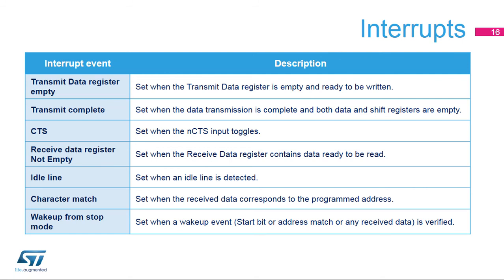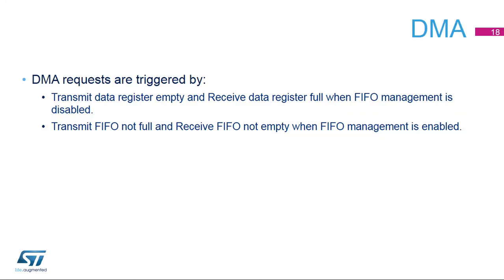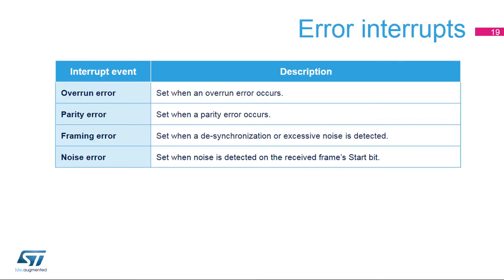This table lists the LPUART events that can generate an interrupt, as well as the FIFO event interrupts when FIFO management is enabled. DMA requests can be generated when Receive Buffer Not Empty or Transmit Buffer Empty flags are set when FIFO management is disabled, or when the Transmit FIFO Not Full and Receive FIFO Not Empty flags are set when FIFO management is enabled. Several error flags can also be generated: Overrun, Parity, and Framing error flags are set when the corresponding error occurs, and the Noise Error flag is set when noise is detected on the receive frame's start bit.